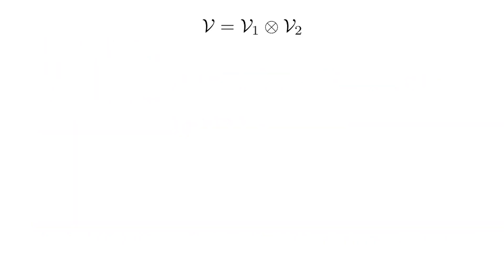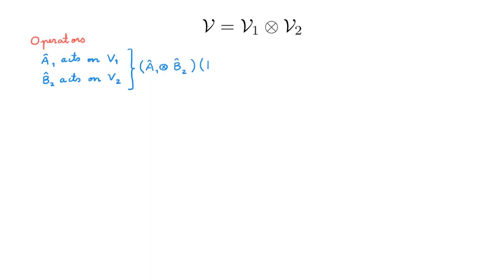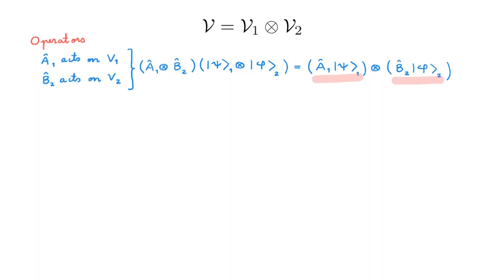Now that we know how kets combine, an actual question is what happens to operators. Let's start with an operator A₁ that acts on V1 and a second operator B₂ that acts on V2. We define the tensor product between A₁ and B₂ by its action on states in the tensor product space — this gives the tensor product between A₁|ψ⟩ and B₂|φ⟩. In the tensor product, A₁ acts on the part of the state associated with V1 and B₂ acts on the part associated with V2. Since not all states in V can be written as tensor products of states in V1 and V2, we also need to understand how the tensor product of operators acts on the most general states in V.